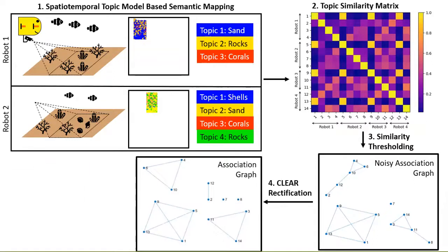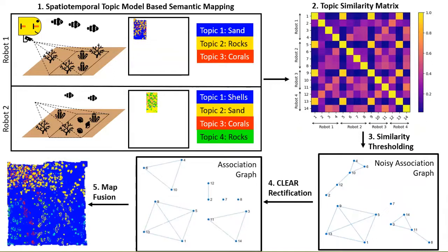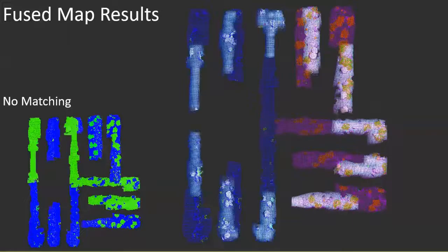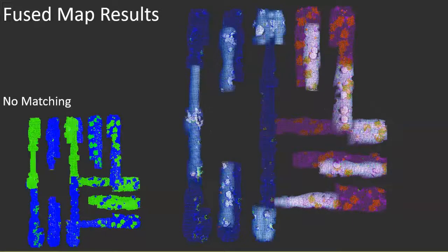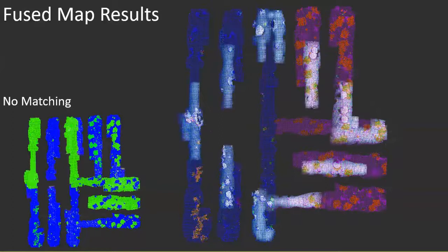These topic matches are then used to fuse the robot's local maps into a consistent global map. Here we see a robot team building a consistent global map, where each color represents a class discovered by one or more robots.